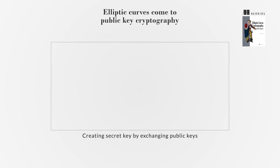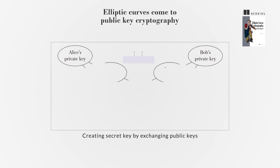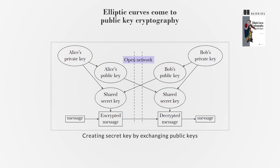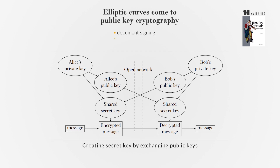Public-key cryptography involves a private key held by an individual or organization and a publicly transmitted key, allowing two parties to create a secure shared secret for encrypted message exchange. This concept extends to various applications, including document signing and multiple signatures on a single document.